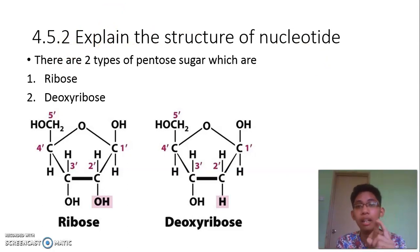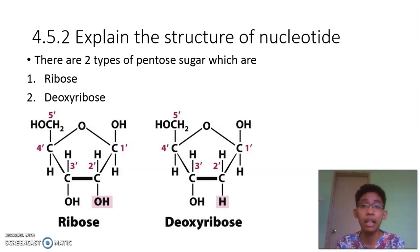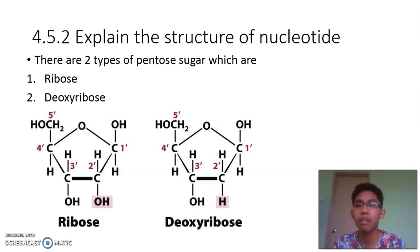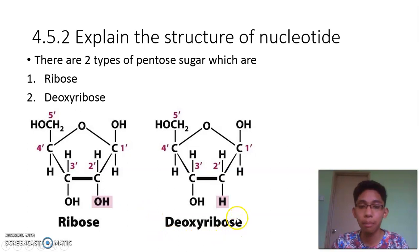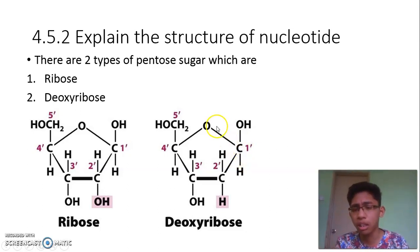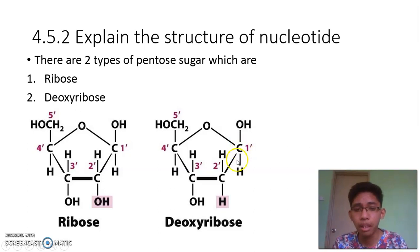There are two types of pentose sugar depending on whether you are building DNA or RNA. For RNA we call it ribose, while for DNA we call it deoxyribose. The pentose sugar is called 'pentose' because the shape of the sugar is like a pentagon — five sides with five carbon atoms.